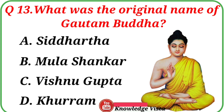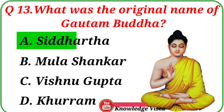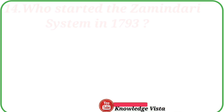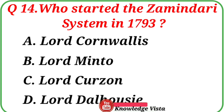Question number thirteen: What was the original name of Gautam Buddha? Your options are: A. Siddhartha, B. Mula Shankar, C. Vishnugupta, D. Khurram. Correct answer is option A, Siddhartha.